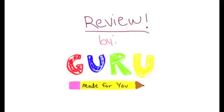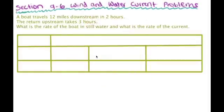Okay, let's look at this problem. A boat travels 12 miles downstream in two hours, and the return upstream takes three hours. What is the rate of the boat in still water, and what is the rate of the current? So let's look at this for a second — what is this asking us?